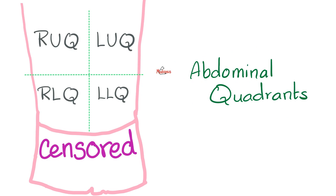If you remember your four abdominal quadrants, we have right upper quadrant, left upper quadrant, right lower quadrant, and left lower quadrant. The liver and biliary system are located here in the right upper quadrant — in the vast, vast majority of people.